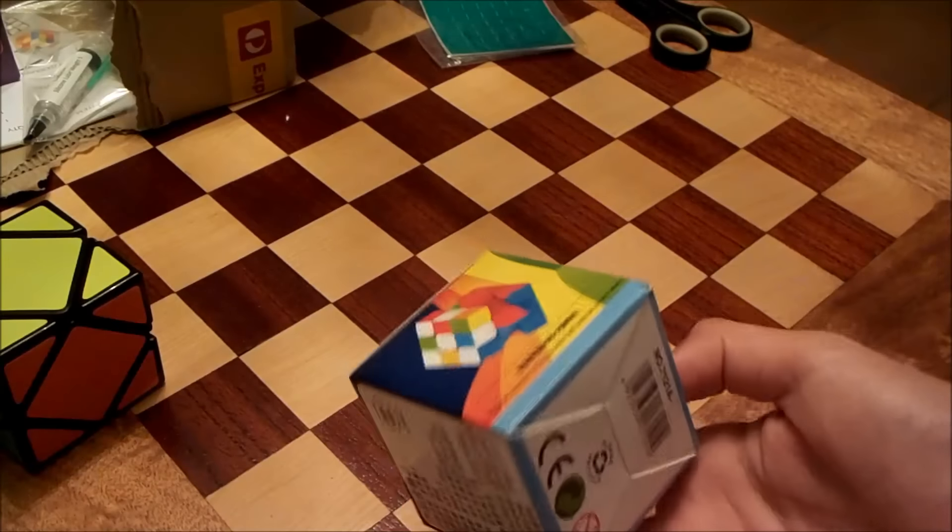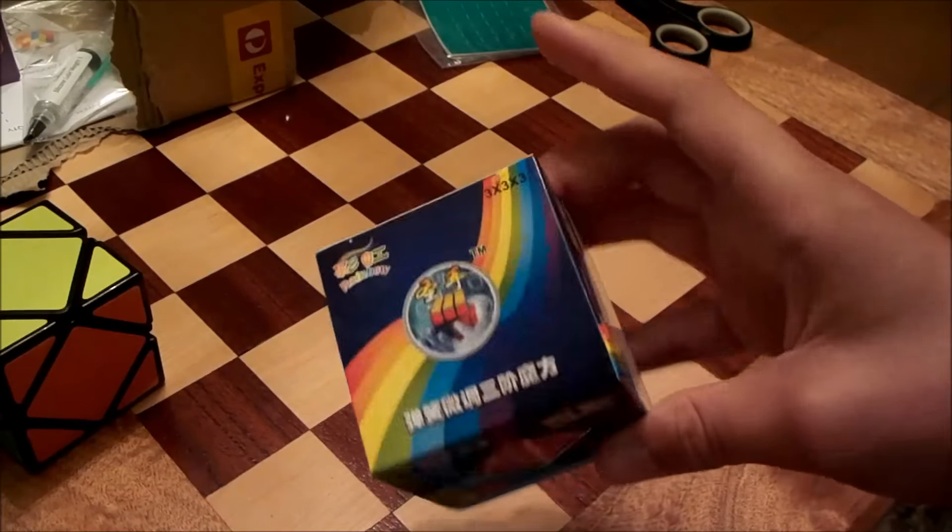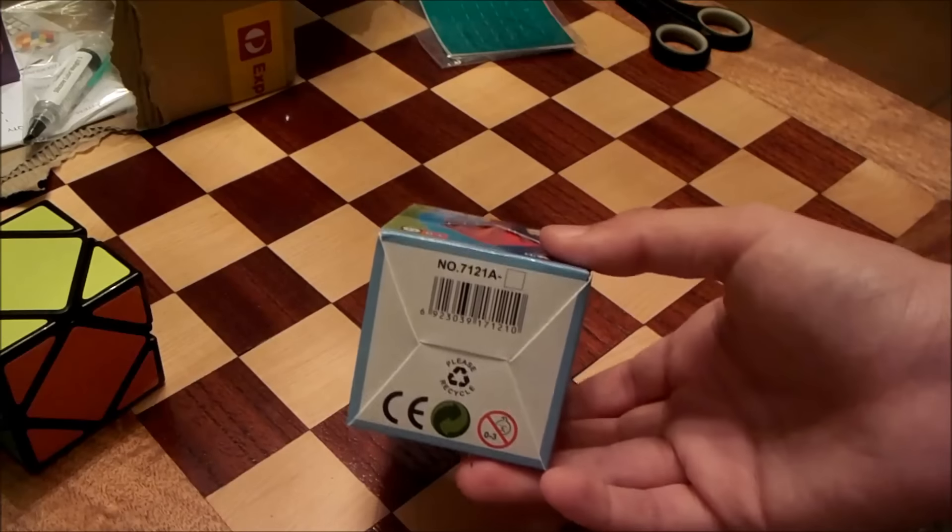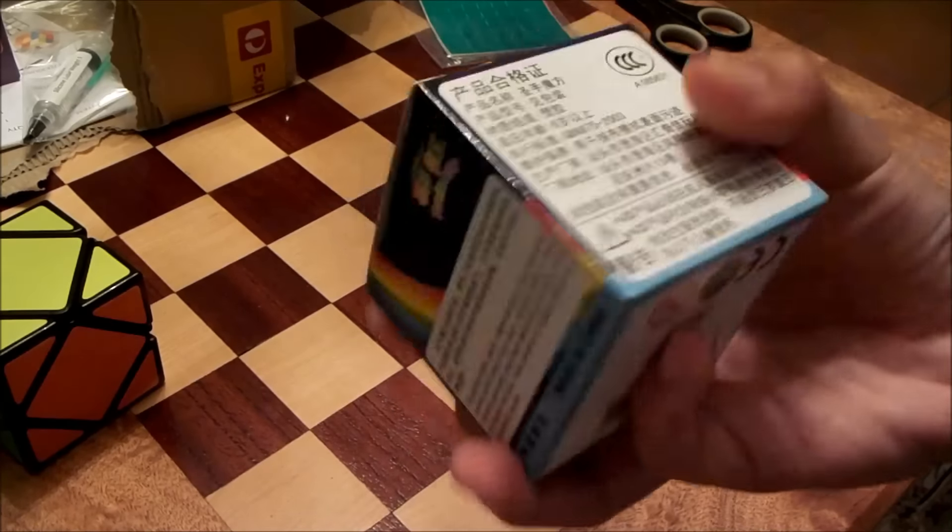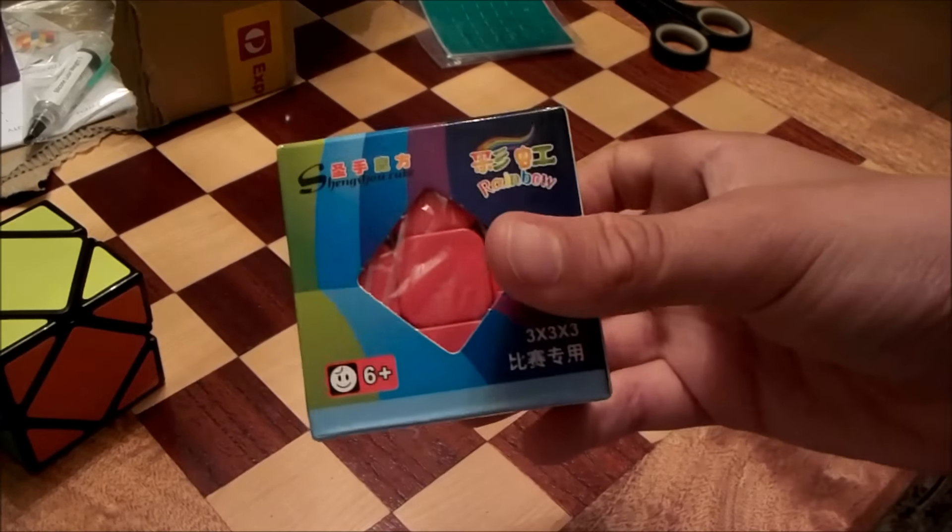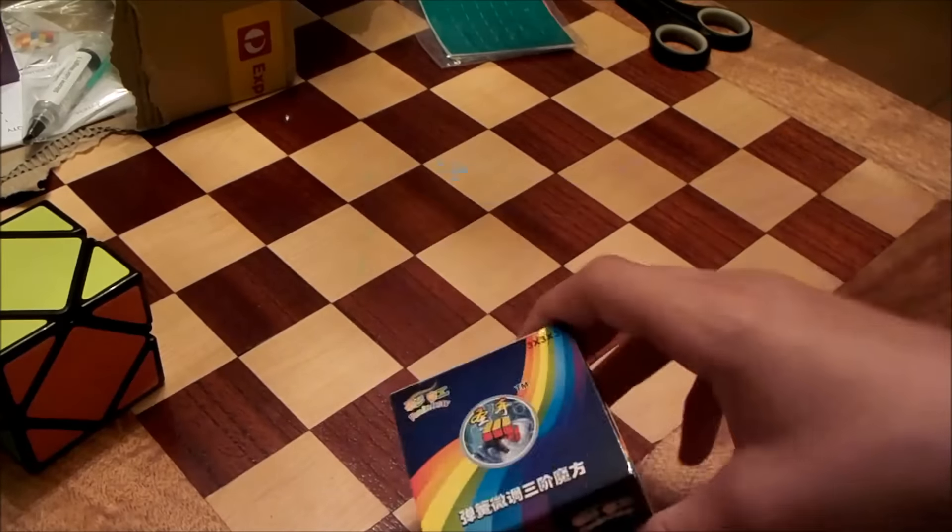So this next cube, which I can't unbox, is the Shengxiao Rainbow. This is the other cube that someone else paid me to get for them. And so this is what the box looks like. It's really colorful. But yeah, I can't unbox that. So it'll feel something like a Shengxiao. And I'm sure you have at least one Shengxiao.